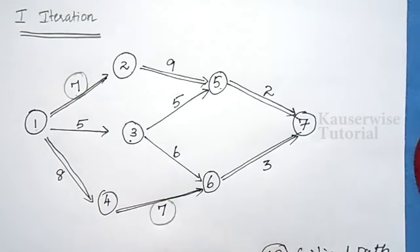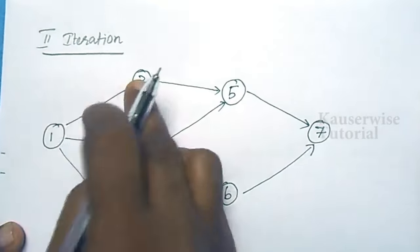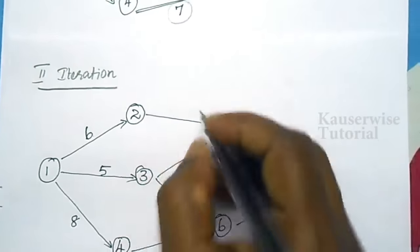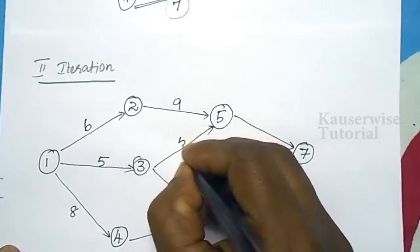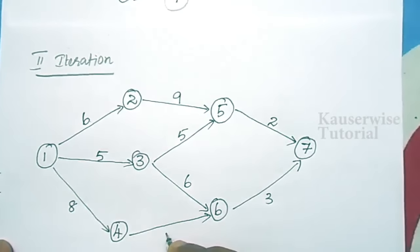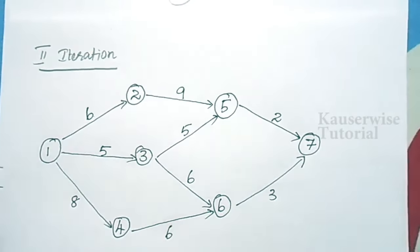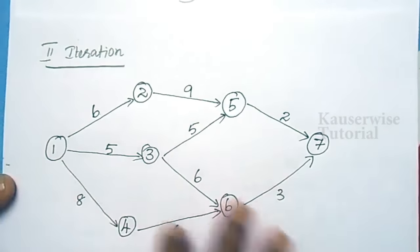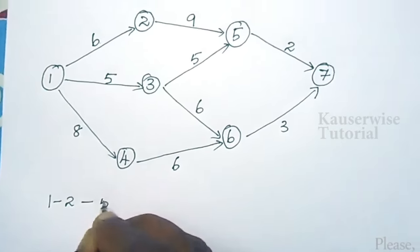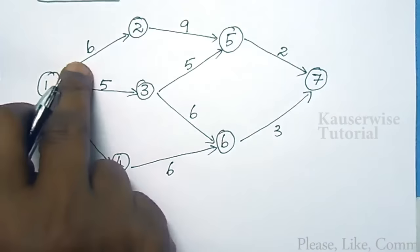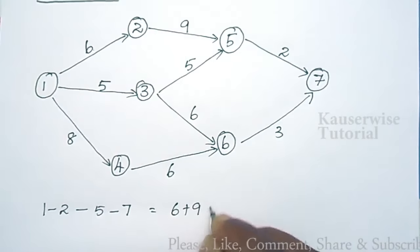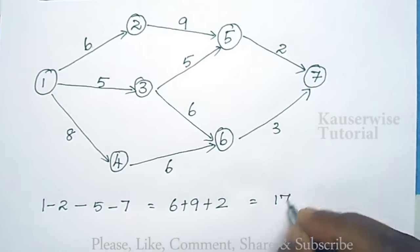In the second iteration, for the first activity (1-2), duration is 6. All other durations remain the same: 5, 8, 9, 5, 6, 2, 3 — except 4-6 is now 6. The possible paths are: 1→2→5→7 with 6+9+2 = 17 weeks.